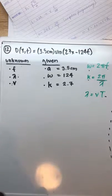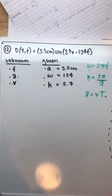For number 12, we are given the following function of a sine wave and are asked to find the frequency, the wavelength, and the speed of the wave.